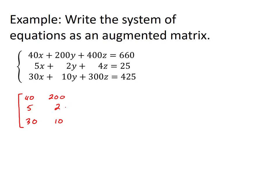The third column will represent the coefficients of the z variable, which are 400, 4, and 300.